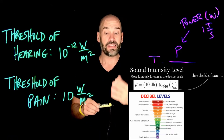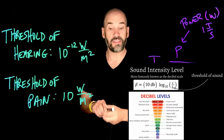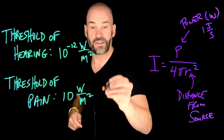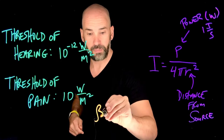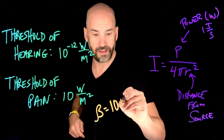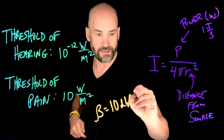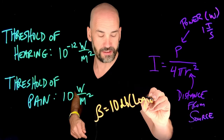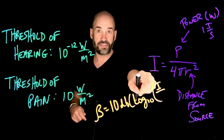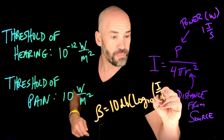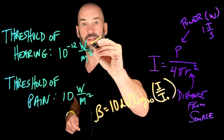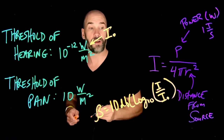The number of decibels is given by the formula: beta equals 10 decibels times log base 10 of the ratio of I, the intensity of the sound, to I-naught, the threshold of hearing. So this threshold of hearing is what we call I-naught.